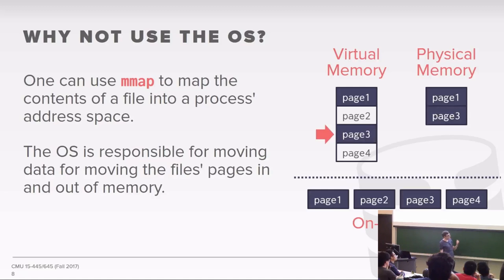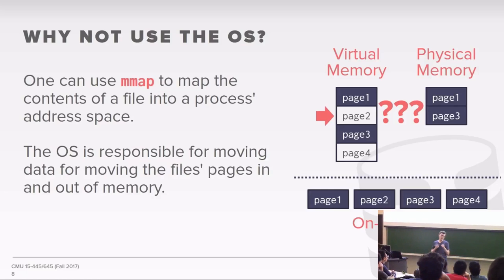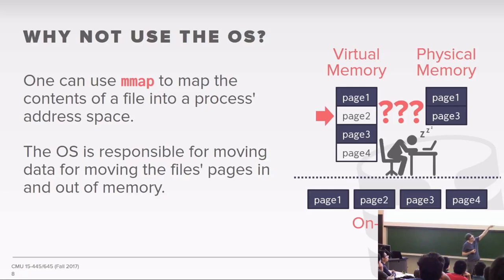When you access a third page and physical memory is full, the OS has to replace one of the pages already there. Linux uses a clock algorithm — an LRU-like policy — to decide which page to swap out. More importantly, the OS is going to put your process to sleep when it hits a page fault, which is an interrupt. The OS blocks your process, goes and fetches the page, brings it into physical memory, does the virtual memory mapping, and then gives control back to your process.